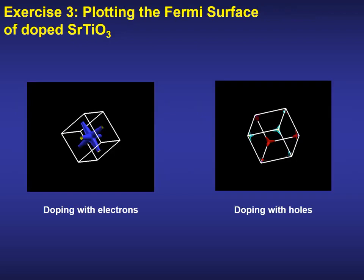Once the Hamiltonian matrix elements are available, we can perform efficient calculations in a very dense grid of K points in a tight binding-like scheme. This can be used to explore in detail Fermi surfaces. That is the final exercise to be run, involving the plotting of the Fermi surface of doped strontium titanate both with holes and electrons.